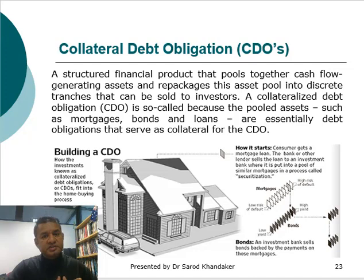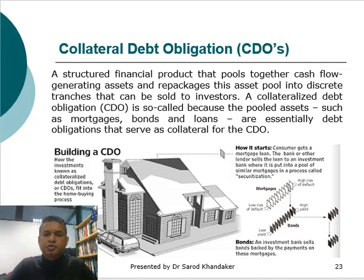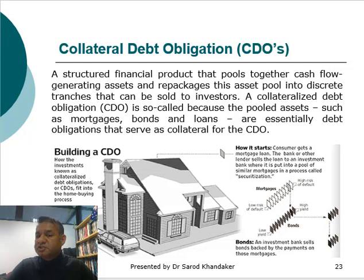Collateralized Debt Obligation (CDO) is a structured financial product that pools cash flow-generating assets, which could be houses, and repackages that asset pool into discrete tranches that can be sold to investors. The pool assets such as mortgages, bonds, and loans are essentially debt obligations that serve as collateral for the CDO.